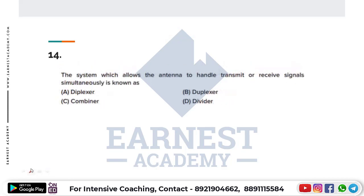The system which allows the antenna to handle transmit or receive signals simultaneously is known as? The antenna will work both as a transmitting and receiving device.